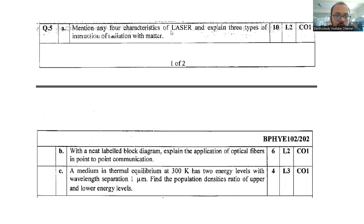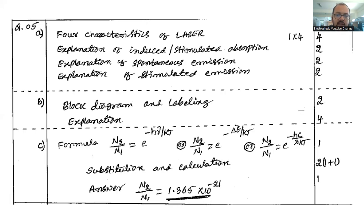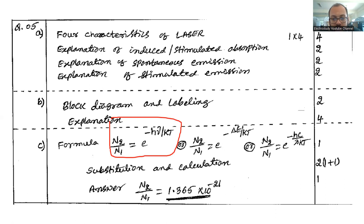Question number 5c is a numerical example. A medium in thermal equilibrium at 300 Kelvin has 2 energy levels with a wavelength spectrum of 1 micrometer. Find the population density ratio of upper to lower energy level. Write down the given data, then write the formula. The general equation is N2/N1 = e^(−hν/kT), or equivalently N2/N1 = e^(−ΔE/kT). Both are acceptable — use whichever you are comfortable with.